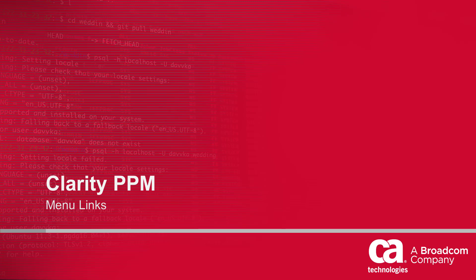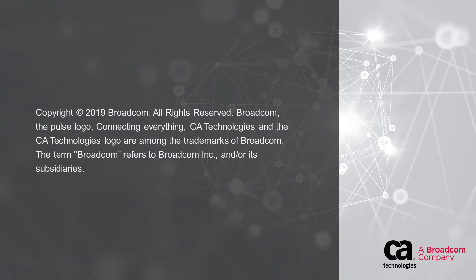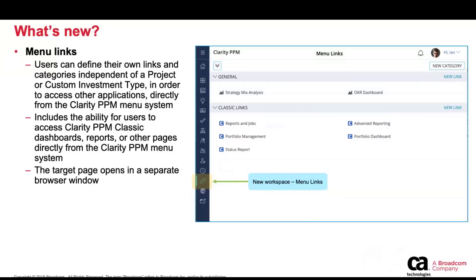Hello, everyone. We're now going to cover the menu links feature that is part of 15.7.1. This has been a long-awaited capability. Customers have been asking for the ability to access other pages or Clarity pages or other systems outside of the context of a project or a customer investment type. Now there is a new way to define those links and categories independent of that project or customer investment type.